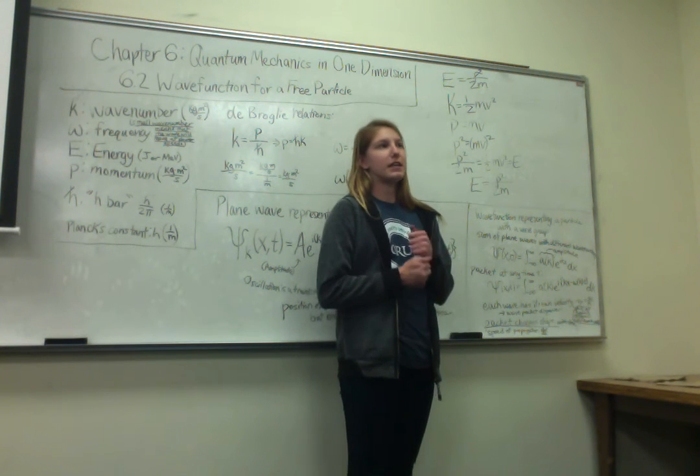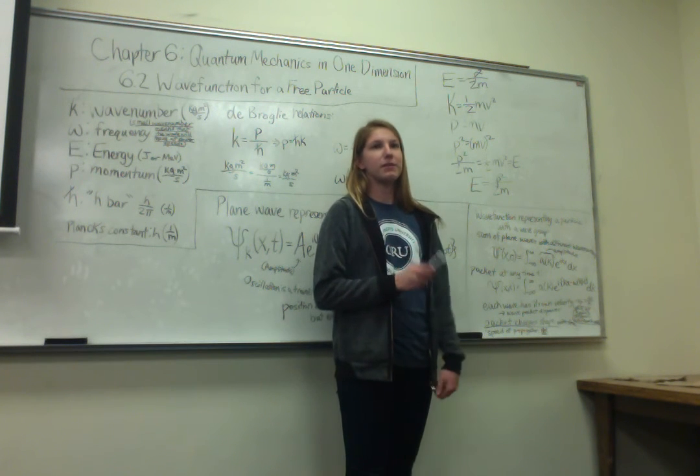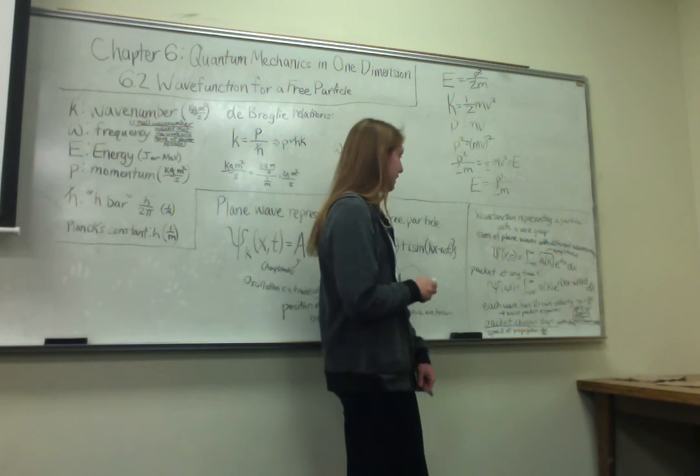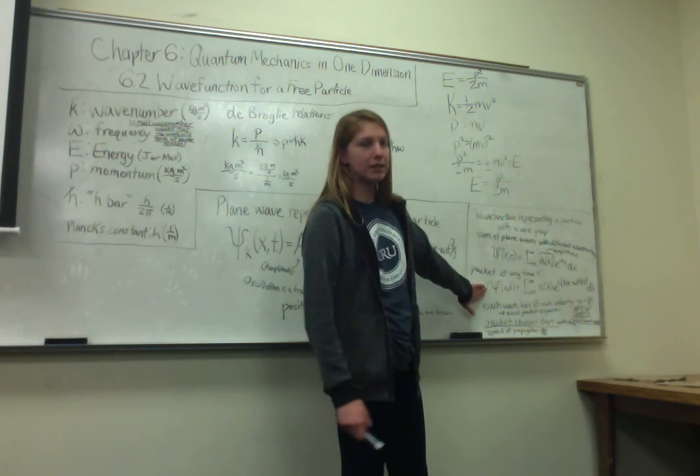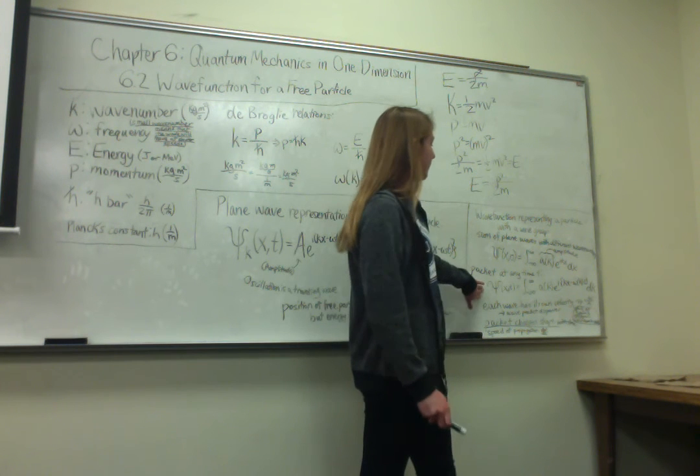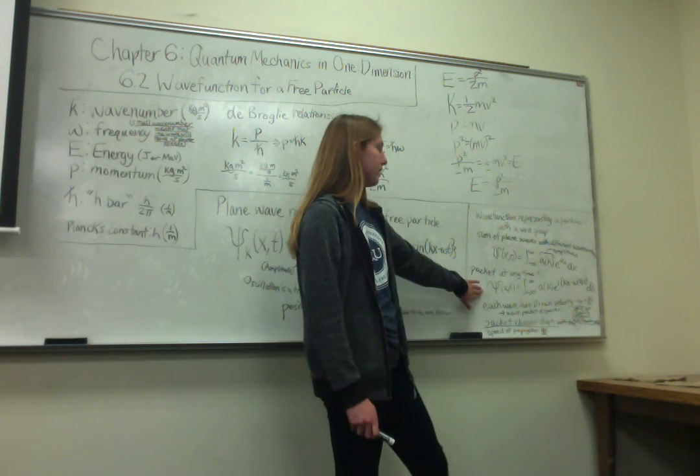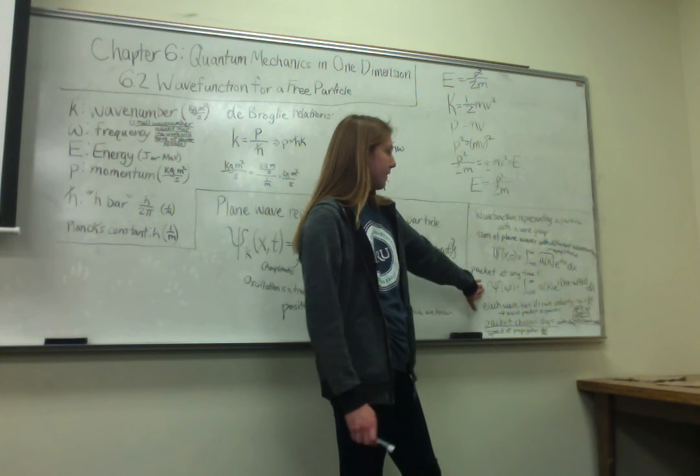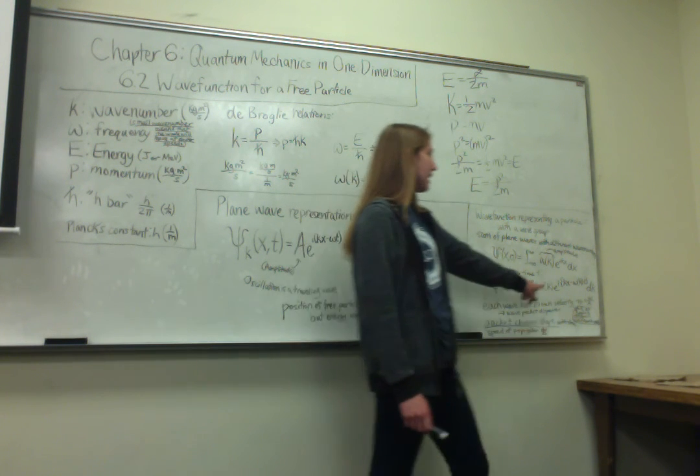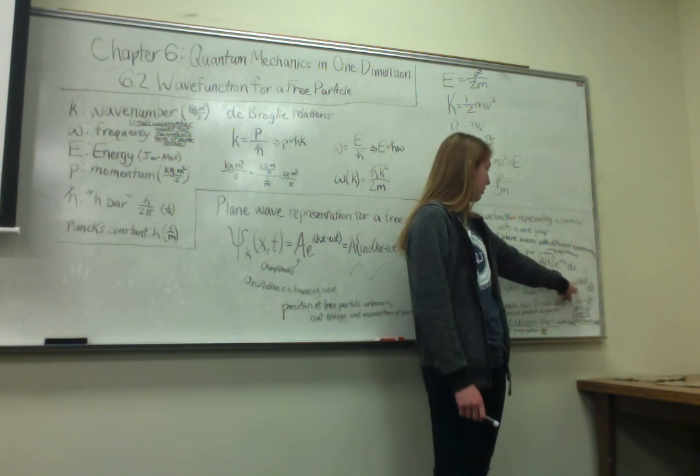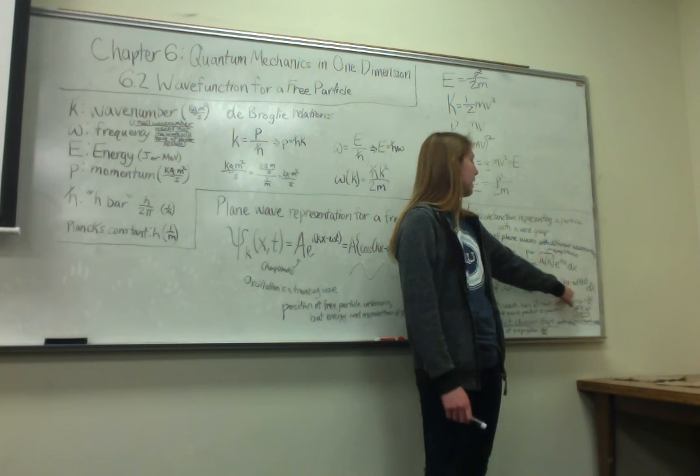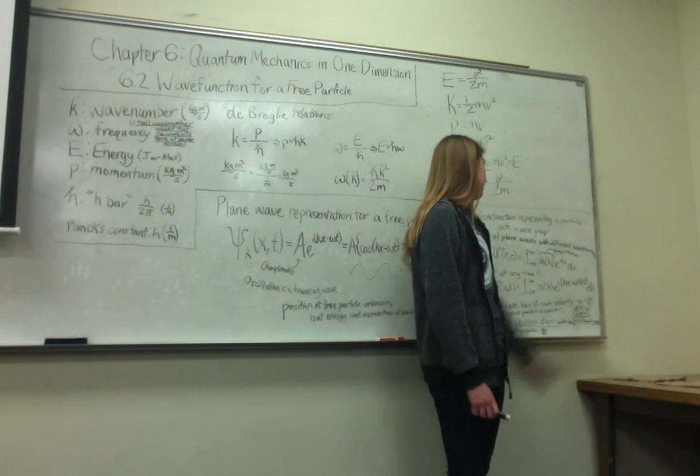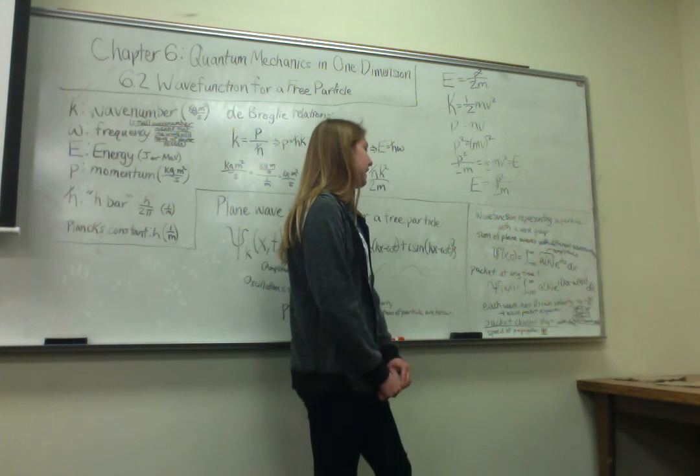And then, in addition to doing it when t equals zero, you can also have a wave function for any time t, which is this one right here. It's the integral from negative infinity to infinity of A of k e to the i times the entire function, or the entire part of the equation, kx minus omega kt, integrated with respect to k.